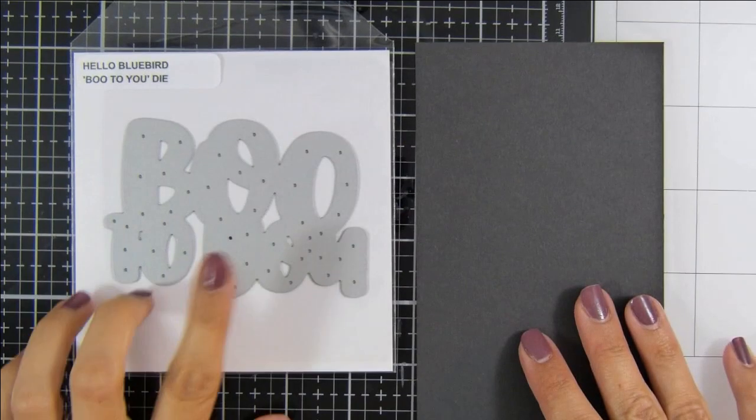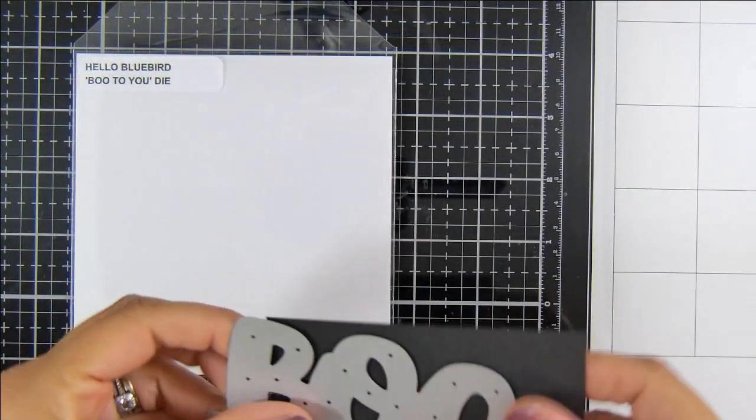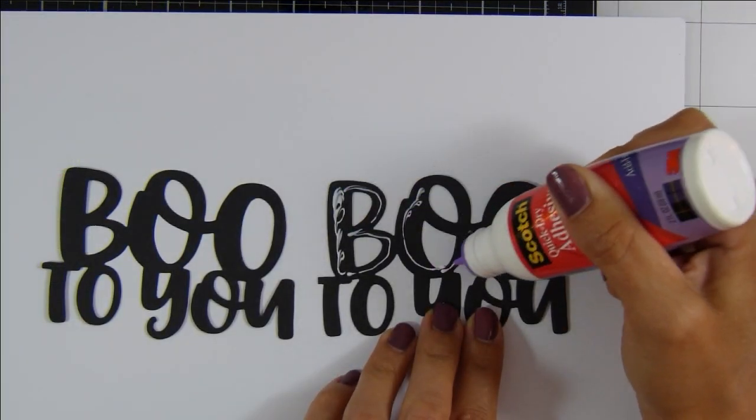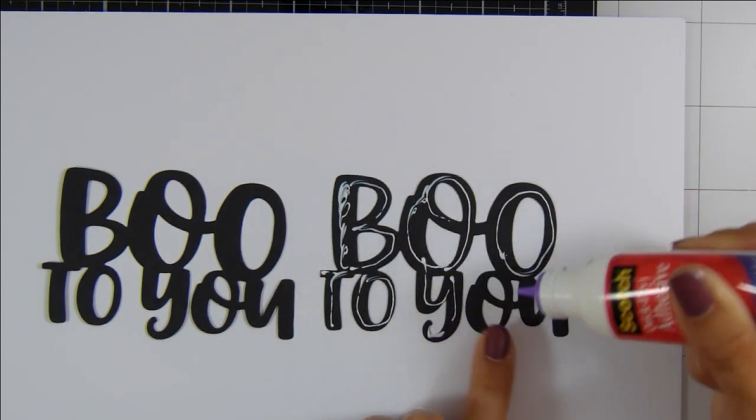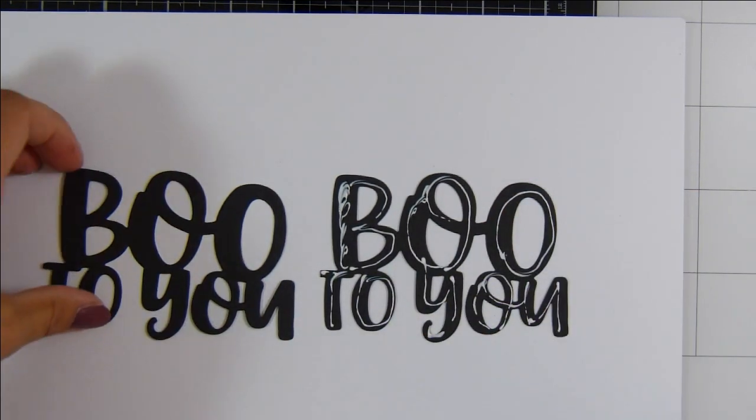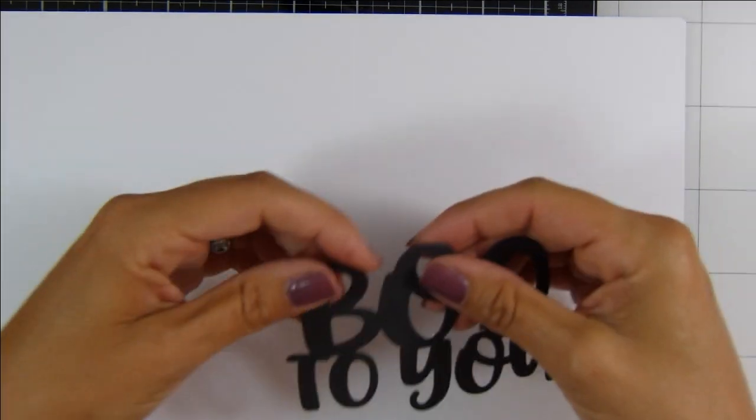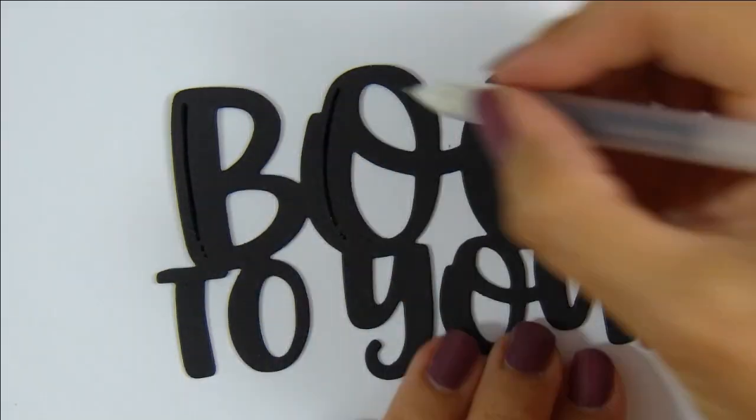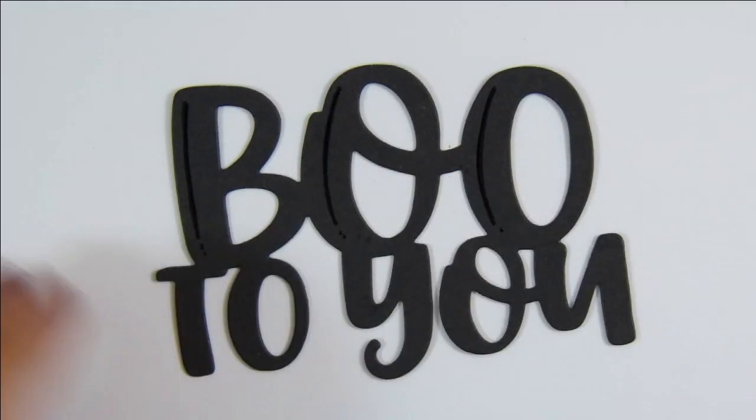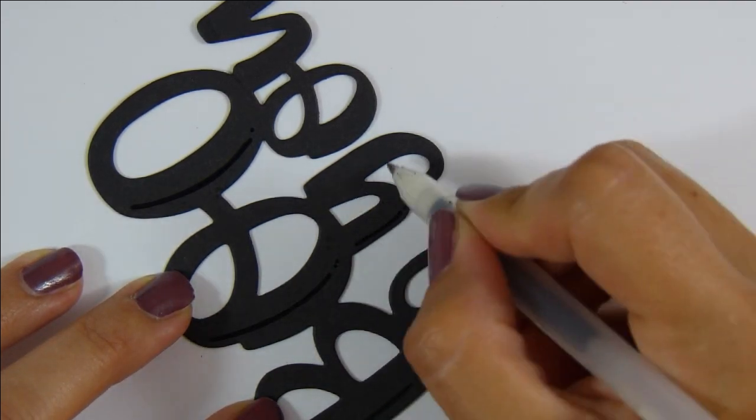And coming back in with those E70s for the stalk of the pumpkin. So that finishes off the coloring for today. The Boo to You die from Hello Bluebird was cut twice from some black cardstock. I did this because this cardstock isn't particularly heavyweight, and we're going to have this sentiment popping up and standing alone when we pull that sliding window die, so I needed it to be sturdy.